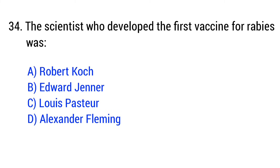Question number 34. The scientist who developed the first vaccine for rabies was? The right answer is option C: Louis Pasteur.